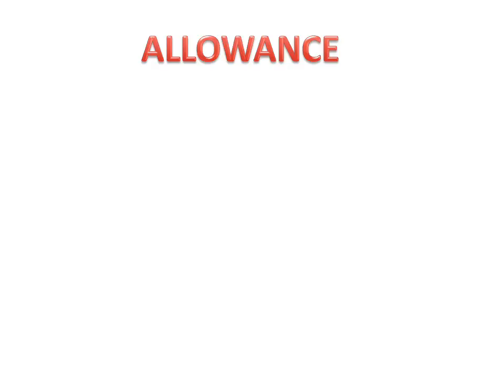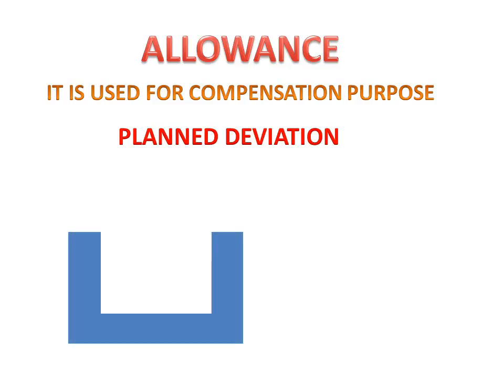Now we will discuss allowance. Allowance is used for compensation purposes. What is compensation purpose? It is a planned deviation — we plan this deviation for the product we want to make.